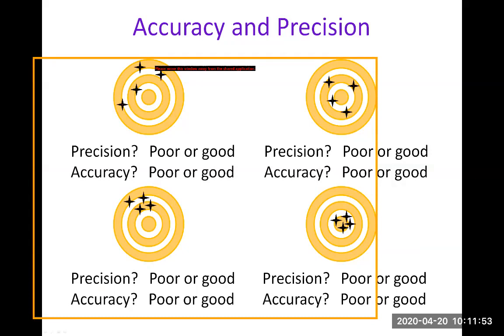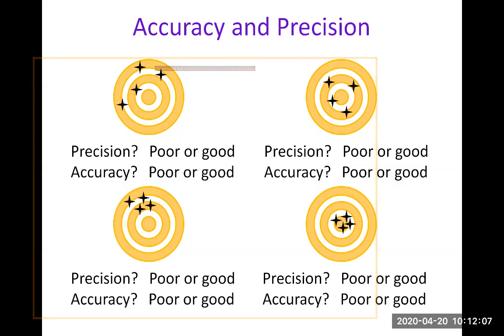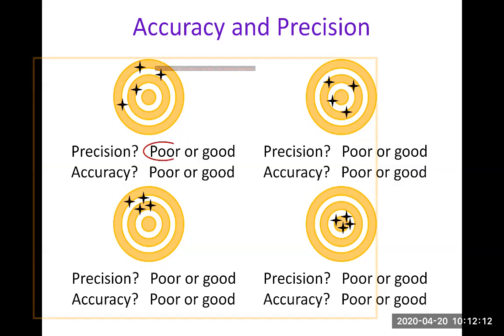So I'm going to ask you, is precision poor or good in this first target to the left? So you can answer poor. Yeah, right. Precision is poor because those shots are quite spread from each other. So that's how you can tell that this is poor.